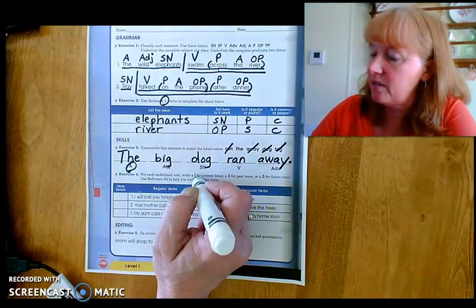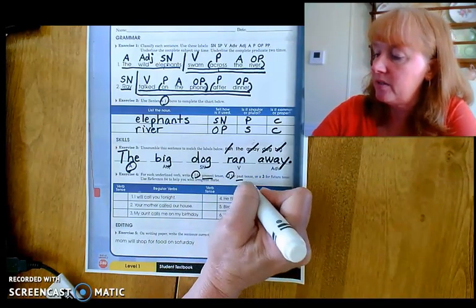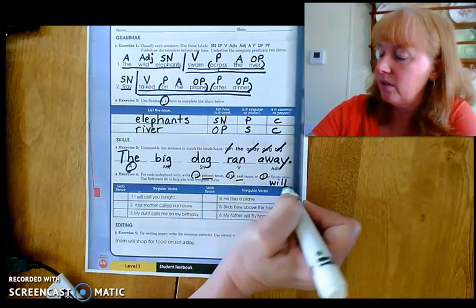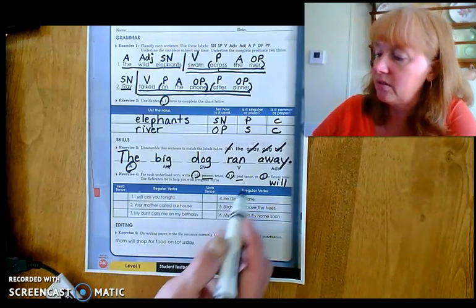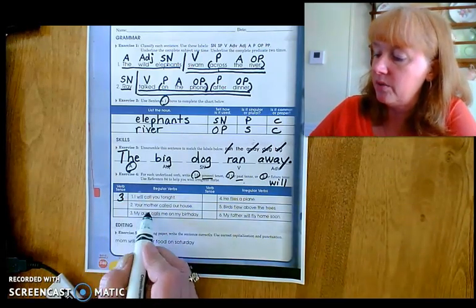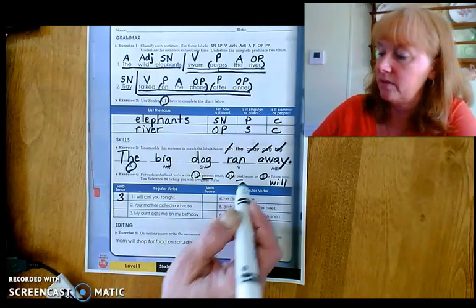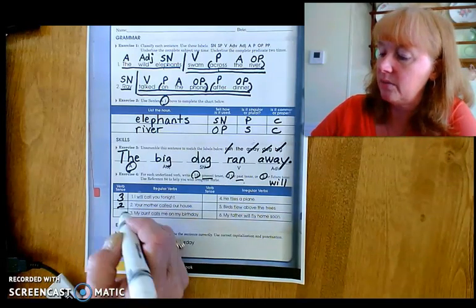Let's work on our verb tense. One for present. Happening now. Two for past. And three for future. Those always have will. Number one. I will call you tonight. Easy peasy. Number two. Your mother called our house. Past tense. Ending. That was easy.